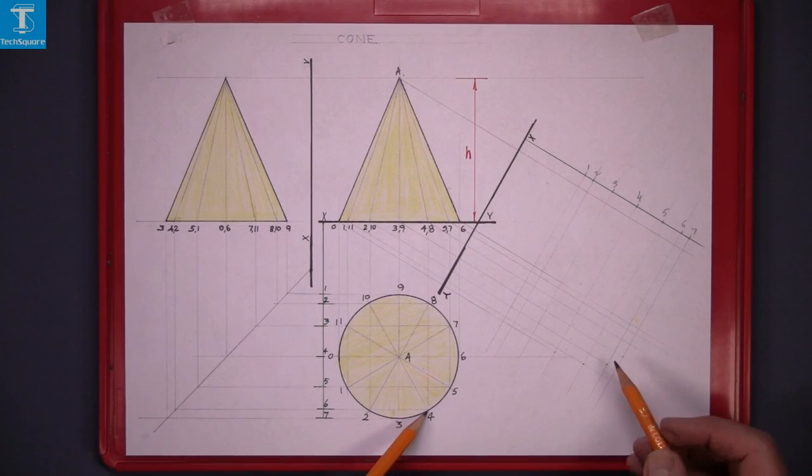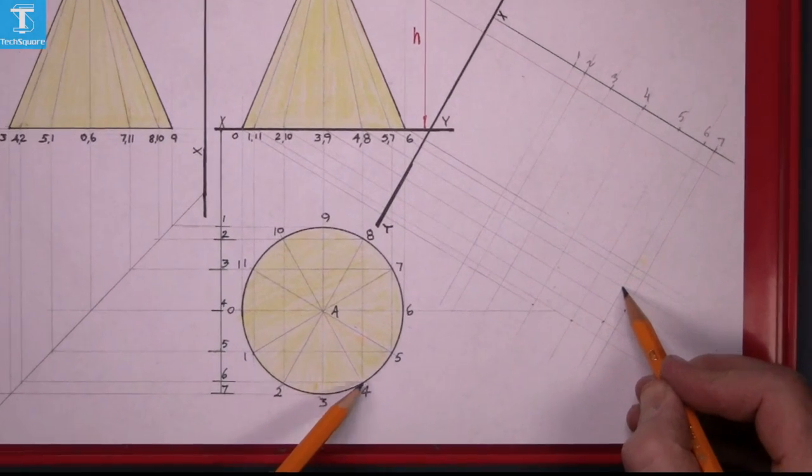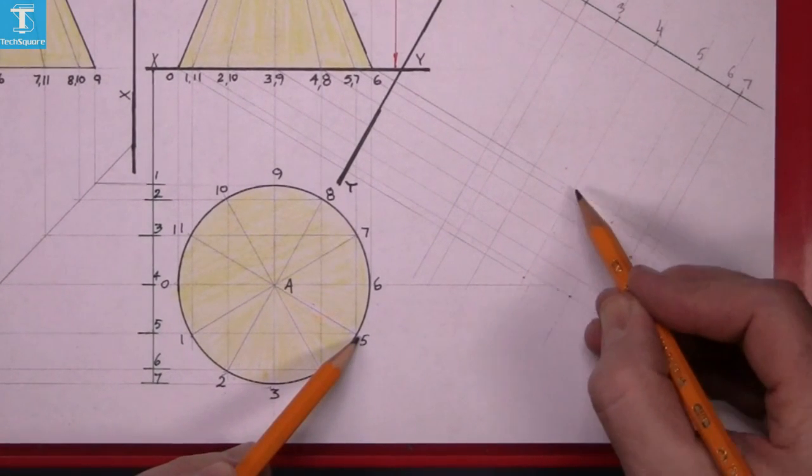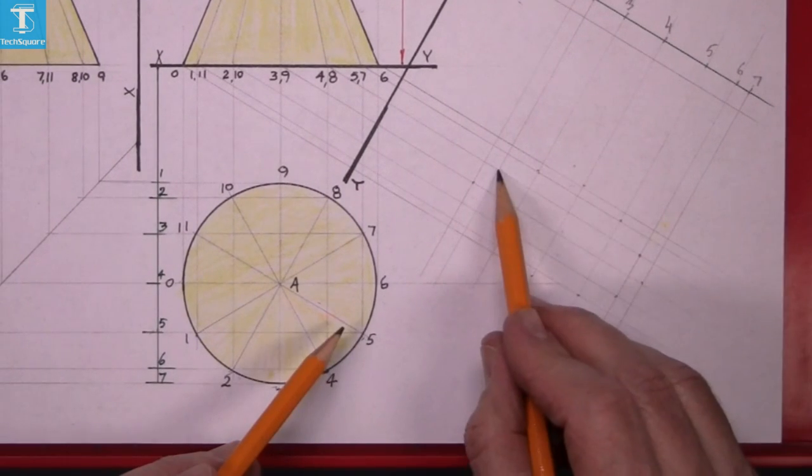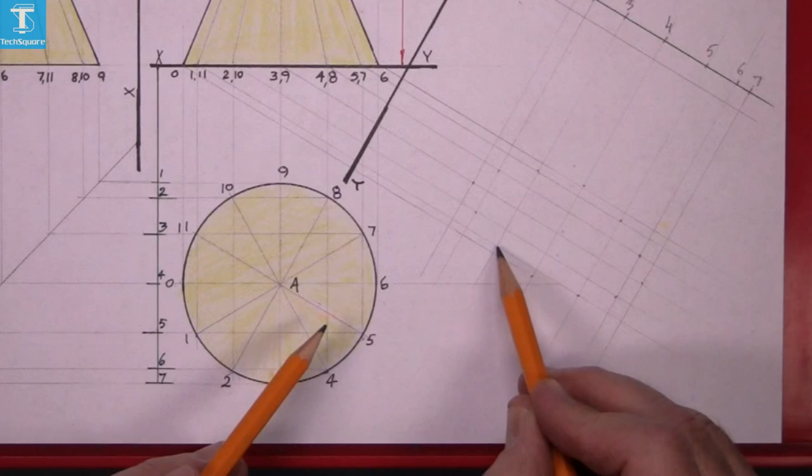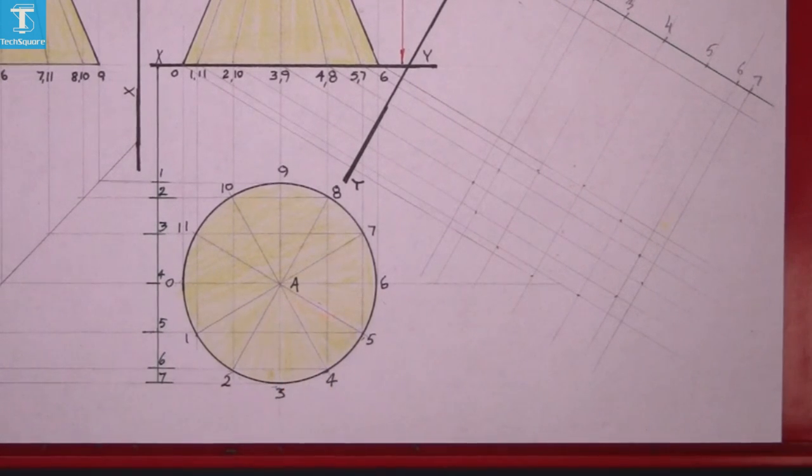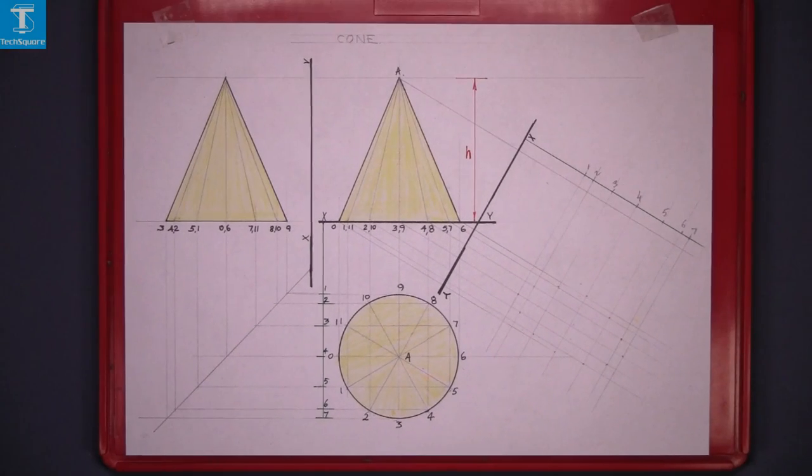Point 4, point 5, 6, 7, 8, 9, 10 and 11 and back to 0 again. And that's the base marked out there.